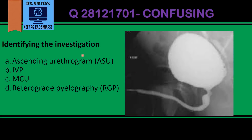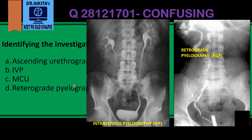Identifying the various investigations is a very important part. Let us see how these four investigations look like and how we differentiate among them. Coming to the first, that is the study of the kidneys — specifically the pelvic calyceal system — so it is called pyelography. Intravenous pyelography or retrograde pyelography means we are basically concentrating on the kidneys.